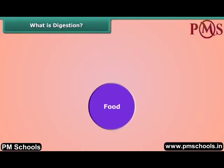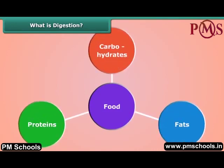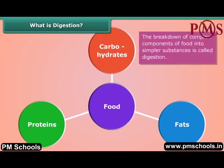We all know food is made up of complex substances like carbohydrates, fats, and proteins. We cannot utilize these substances as such, so they are broken down into simpler substances. The breakdown of complex components of food into simpler substances is called digestion. Let us study digestion in human beings.